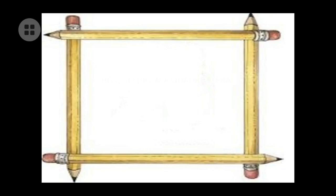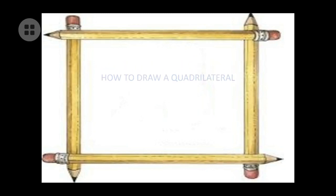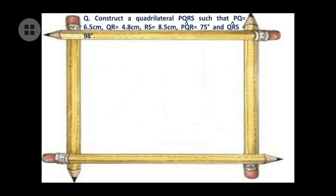Now let's look at the first question: construct a quadrilateral PQRS such that PQ = 6.5 cm, QR = 4.8 cm, RS = 8.5 cm, angle Q (angle PQR) = 75 degrees, and angle R (angle QRS) = 98 degrees.